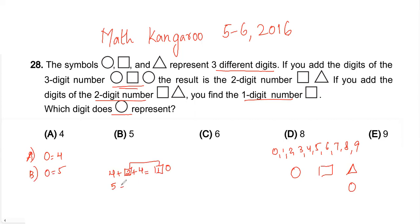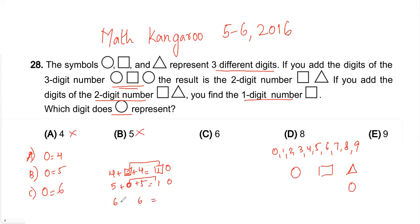For option B, the circle is five. Five plus five gives ten, so the square would have to be zero. But then zero and one don't match, and also the square and triangle must be distinct digits — both can't be zero. So B is also not the answer.